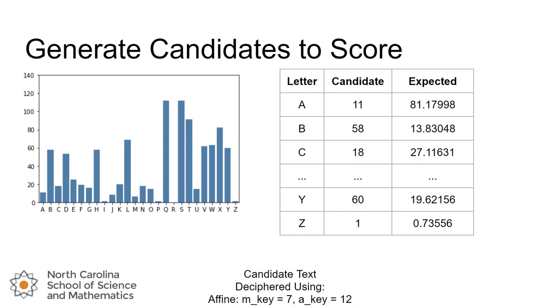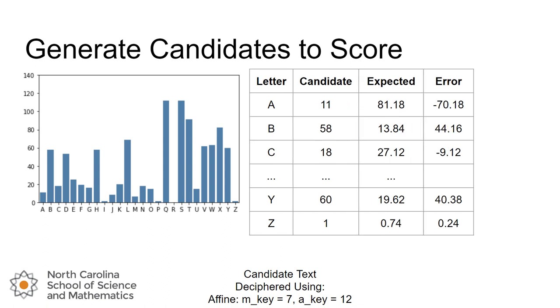We're going to start by taking this candidate. So we're going to stick with this candidate I created by deciphering the ciphertext with a multiplicative key of 7 and an additive key of 12. And I'm going to count up how many letters are in the candidate text. So in this case, this matches with the bar chart. There's 11 As, 58 Bs, 18 Cs, and so on. And all the way down to the end, we get 60 Ys and 1 Z. And we can look at that and compare it to what we expected to be there. And the expected is based off of probabilities of what we would expect there to be in the plain text for a message of this length. And you can see that they're pretty different. And we can actually quantify that difference, and we call that error. So if we subtract off the expected from what we counted, or the actual count in the candidate, we can produce a value that measures the error in each category. And what I mean by category is letter.